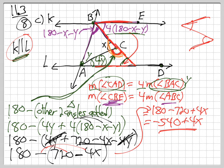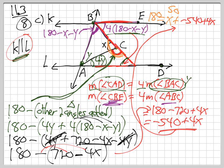These two are one side of a straight line, so my final step. Let me come up here. So X plus the one I got right here, minus 540 plus 4X, must equal 180, because they make one side of a straight line.